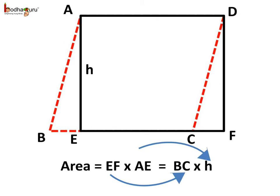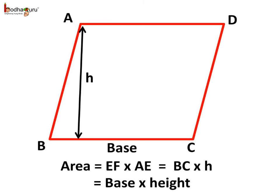So, we rearranged ABCD to make AEFD, and thus the area of ABCD is also EF multiplied by AE. We saw that EF was equal to the base of the parallelogram, which is BC, and AE is equal to the height of the parallelogram, which is H. So, the area of a parallelogram is equal to base multiplied by height.